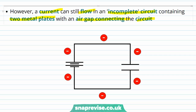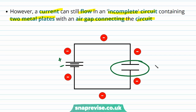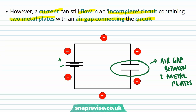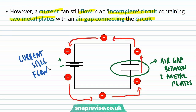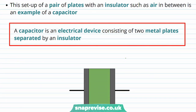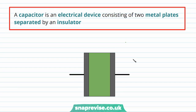Here we have a battery pack and an air gap set up in the circuit between two metal plates. It turns out that current can still flow through the circuit. This setup of a pair of plates with an insulator such as air in between is an example of a capacitor.